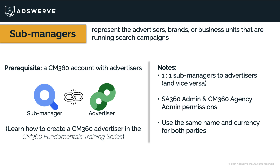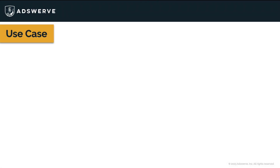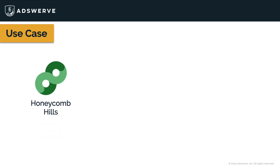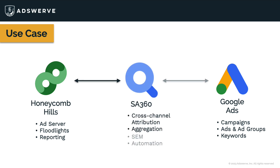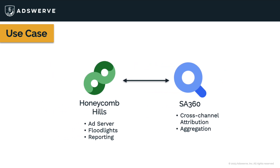Now that I've thrown all those rules at you, let's get to the good stuff and create a sub-manager. I recently built a CM360 advertiser called Honeycomb Hills. This advertiser has a search marketing campaign running in Google Ads, and now I want to use Search Ads 360 to automate bids and manage my budget. To get started, I'll first need to build Honeycomb Hills as a sub-manager in SA 360.